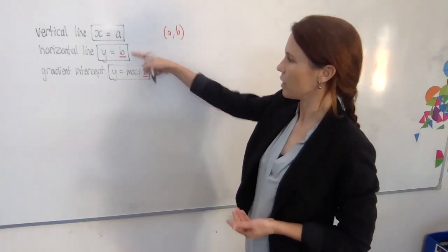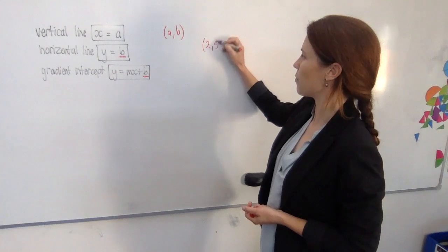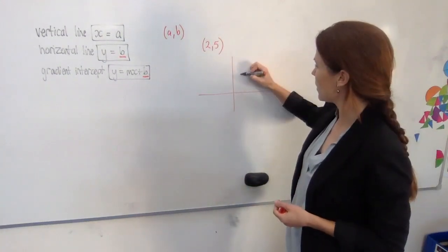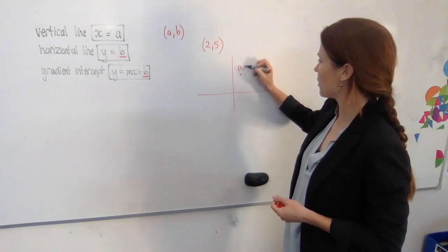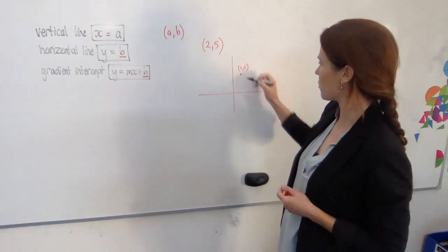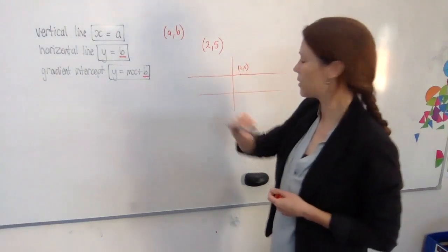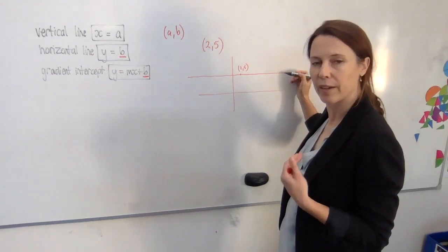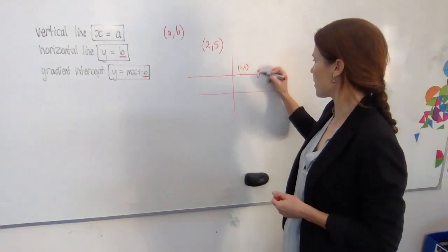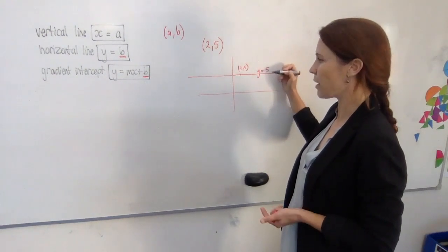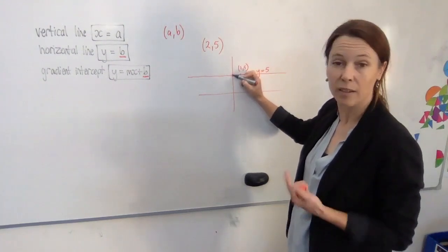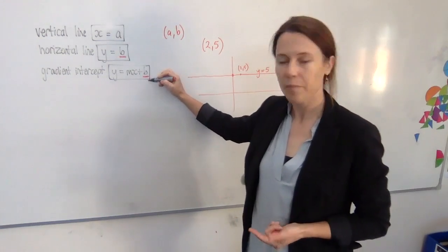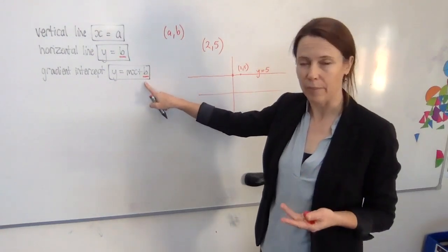If we've got a horizontal line, and we know, say, that it's going through some point, we're told we've got a horizontal line going through the point (2,5), what's the equation of the line? Think about where (2,5) is, and then think, well, it's a horizontal line, so it's horizontal, draw it in. Now, all of the points on that line have a y-coordinate of 5, don't they? So it makes sense that this line is called y equals 5. Now, where does it cut through the y-axis? At 5. So it turns out this b, in this case, is also the y-intercept.